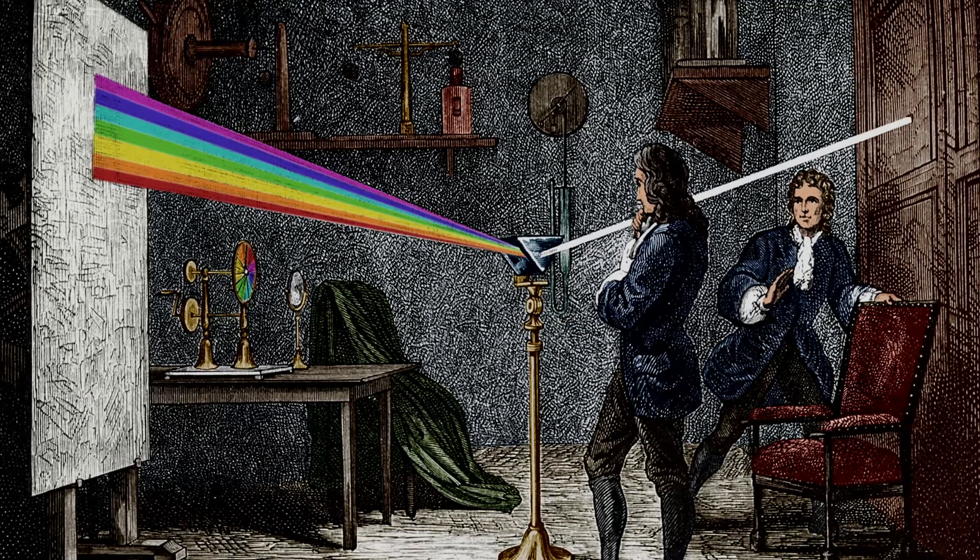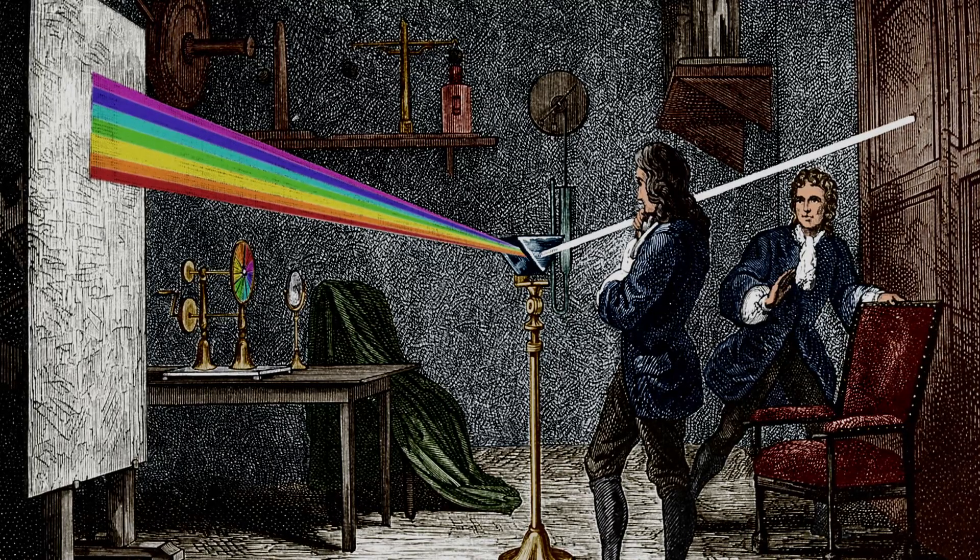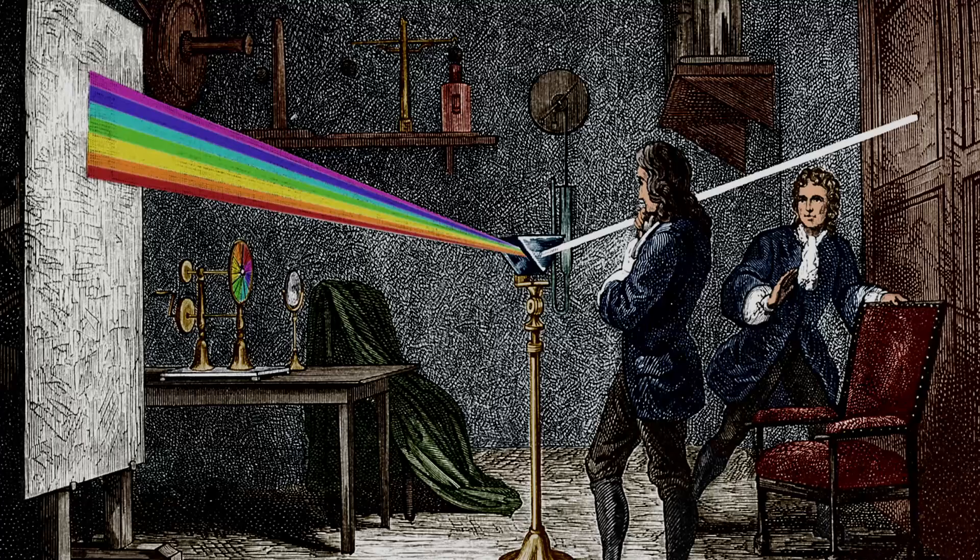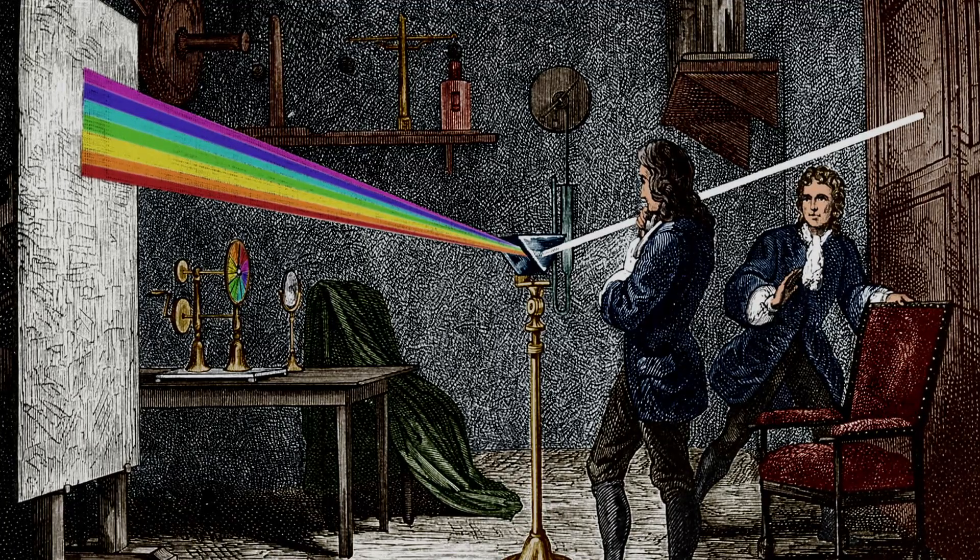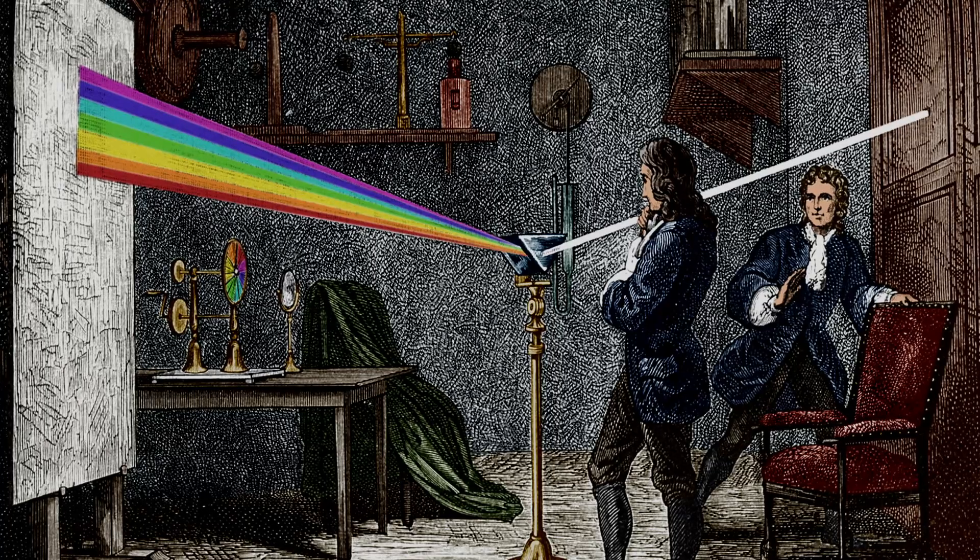This is Sir Isaac Newton and his famous experiment with the prism. He famously shows how white light is composed of three different colors: red, green and blue.